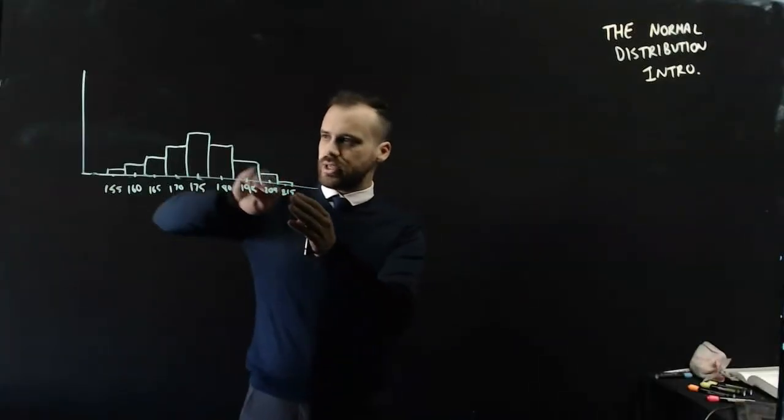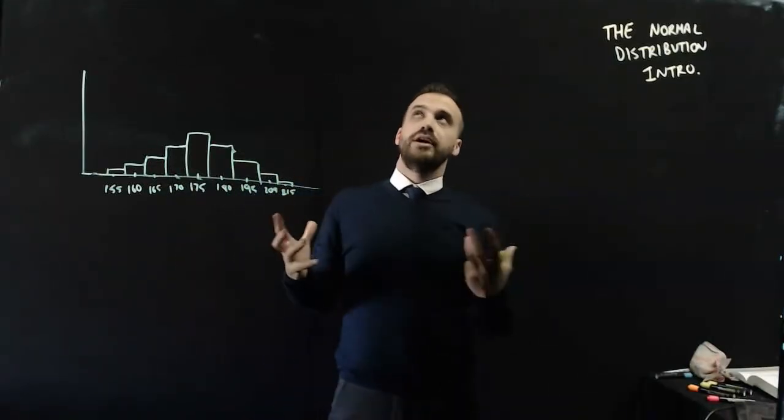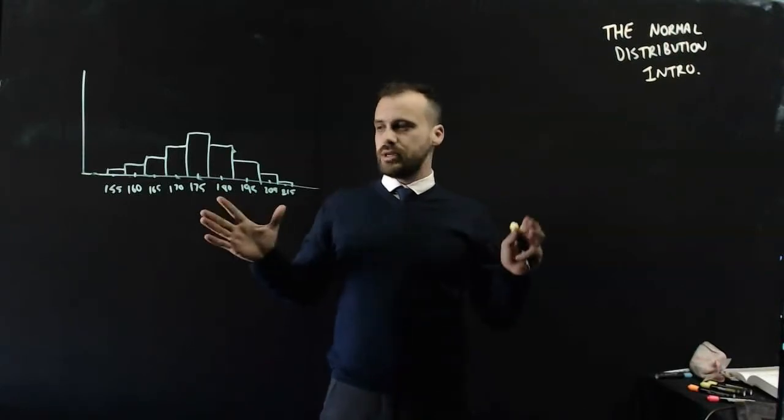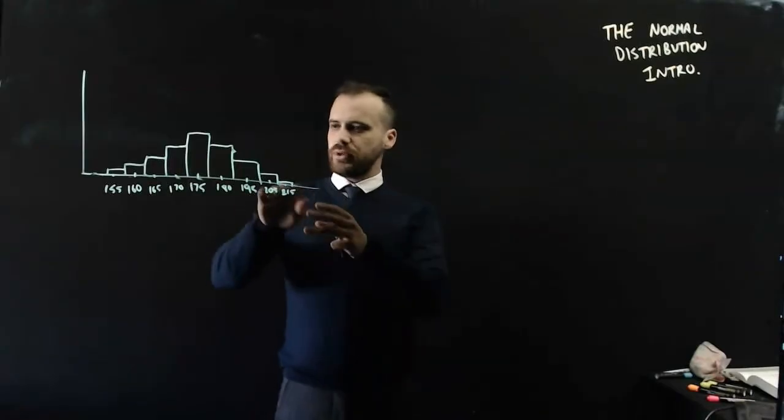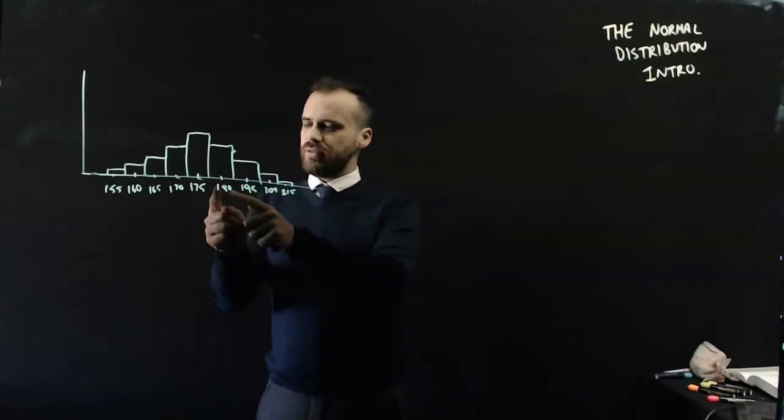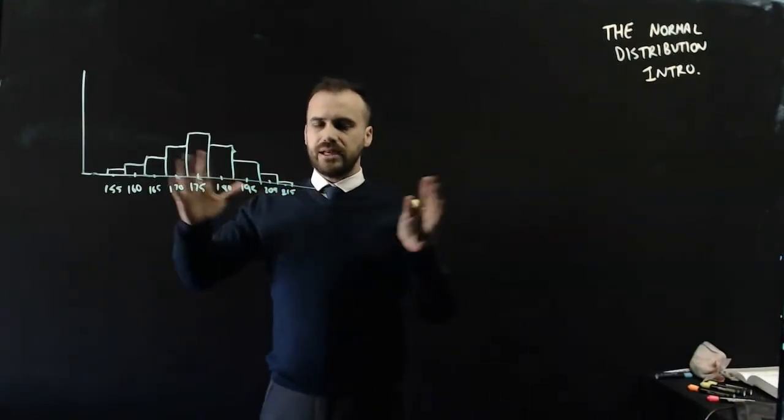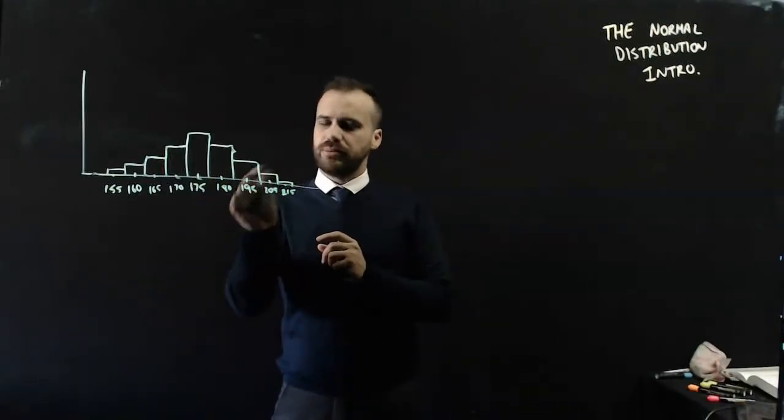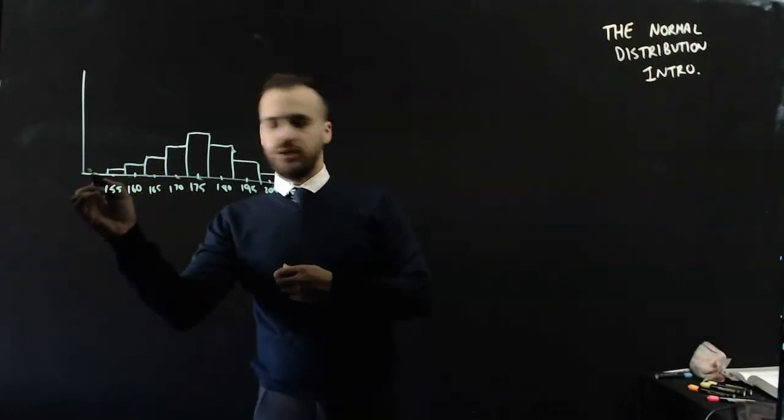Now, you can see we get this nice little curve here. Imagine you went around and you got everyone in Australia, 23 million people, to line up from shortest to tallest. If we were to create a histogram like this, it would have the same sort of shape. But now, instead of having bin widths of 5, let's make them very, very thin rectangles. We can approximate it as a nice smooth curve.